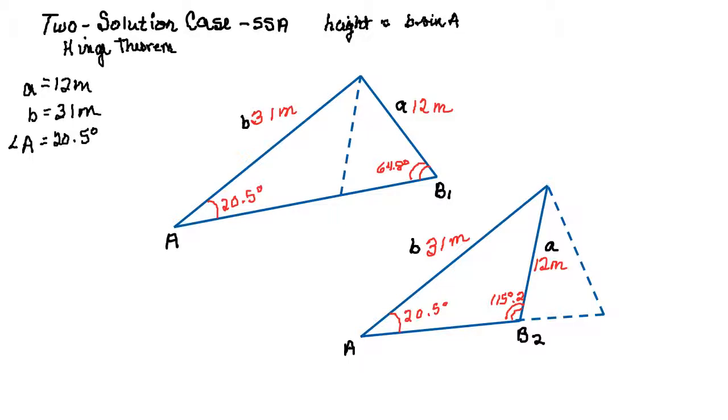Because we have that cool thing that says the height equals side B sine A, we actually can find H here by taking our side B which is 31 and multiplying it to the sine 20.5, which gives us approximately 10.86 meters.